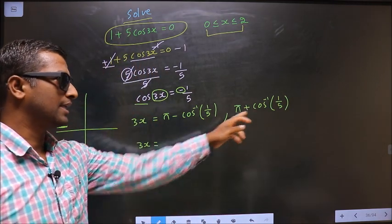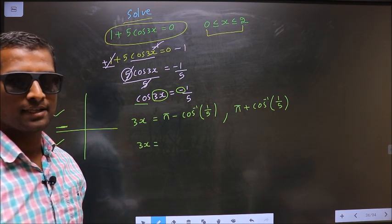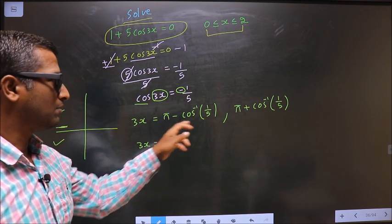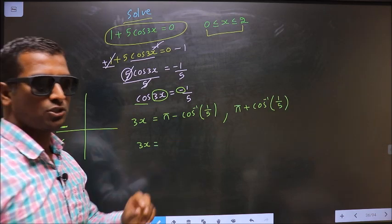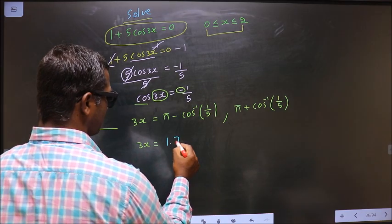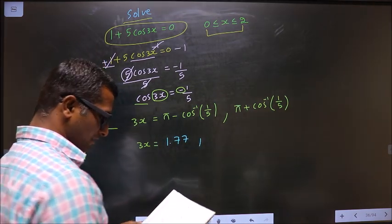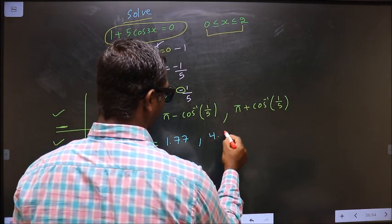Now 3x equal to, before you calculate this, make sure your calculator is in radians mode. Now put this in the calculator, you should get 1.77. Calculate this, you should get 4.51.